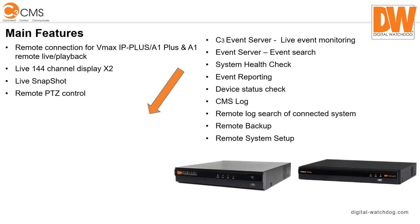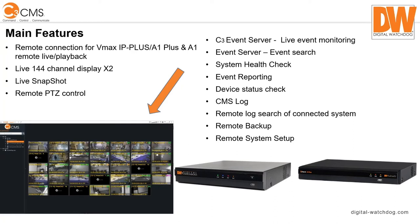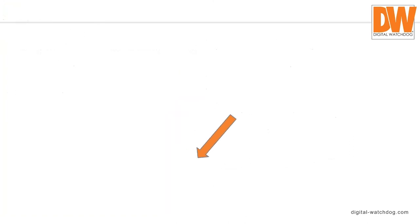There are several main features: remote connection to our products, up to 288 cameras live across two monitors, a live snapshot function, remote PTZ control, and the C3 Event Server. The software really has two pieces — the live view and playback piece, and the event server piece. You can have one camera playing back while searching for something, while the rest of the cameras remain live, or dedicate a whole monitor to live video while you search.